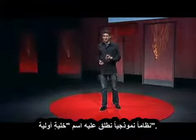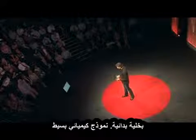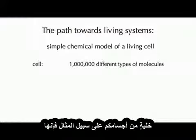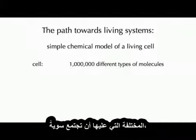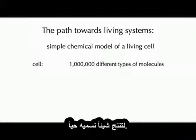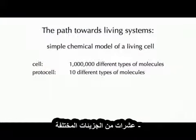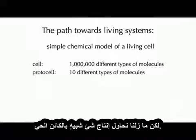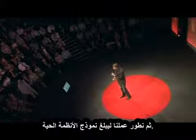So how do we do this? We use a model system that we term a protocell — think of this as a primitive cell, a simple chemical model of a living cell. A cell in your body may have on the order of millions of different types of molecules that need to come together in a complex network to produce something we call alive. In the laboratory, we want to do much the same, but with on the order of tens of different types of molecules — a drastic reduction in complexity, but still trying to produce something that looks lifelike. We start simple and work our way up to living systems.